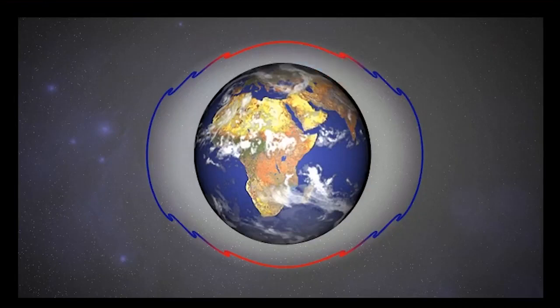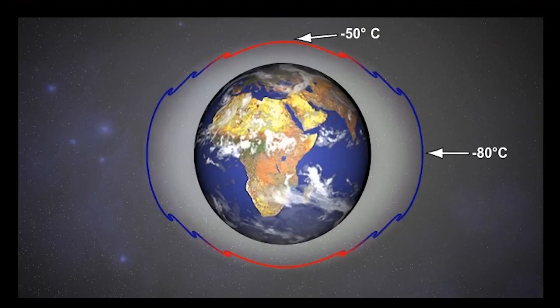If we know that temperature decreases with height, then it follows that the closer the tropopause is to the Earth, the warmer it will be. Over the poles, the tropopause temperature is about minus 50 degrees Celsius, and over the equator, it's minus 80 degrees Celsius.